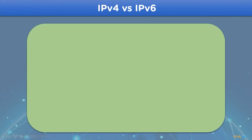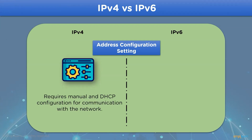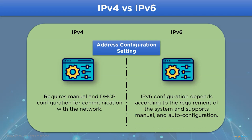The next difference is based on address configuration. In IPv4 version addresses, a manual setting for the network is required along with DHCP configuration settings, whereas in IPv6 version addresses, the network setting is based on the system's requirement, and it also supports auto-configuration settings for the system.